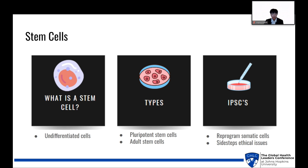Moving on to stem cells. Stem cells are one of the most well-studied topics in medicine. What is a stem cell? They're undifferentiated cells with the potential to become various cell types in the body. There are pluripotent stem cells, like embryonic stem cells, and adult stem cells, such as mesenchymal stem cells.